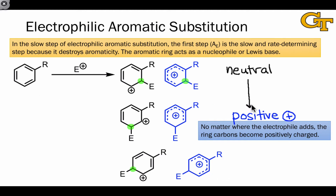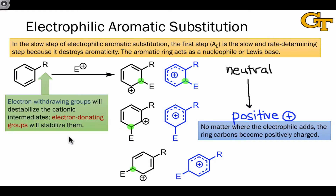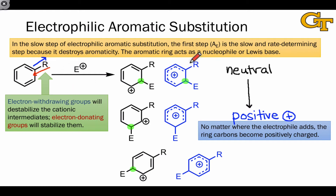The blue structures show the resonance hybrids that correspond to the sigma-complex. In going from the starting aromatic to the sigma-complex intermediate, we're draining electron density from the ring. Electron-withdrawing groups, which pull electron density from the ring, will destabilize these cationic sigma-complex intermediates, since they inject positive charge into the ring. Electron-donating groups, on the other hand, donate negatively charged electron density back to the ring, and so these substituents will tend to stabilize the sigma-complexes by introducing negative charge in the vicinity of the positive charge within the ring.